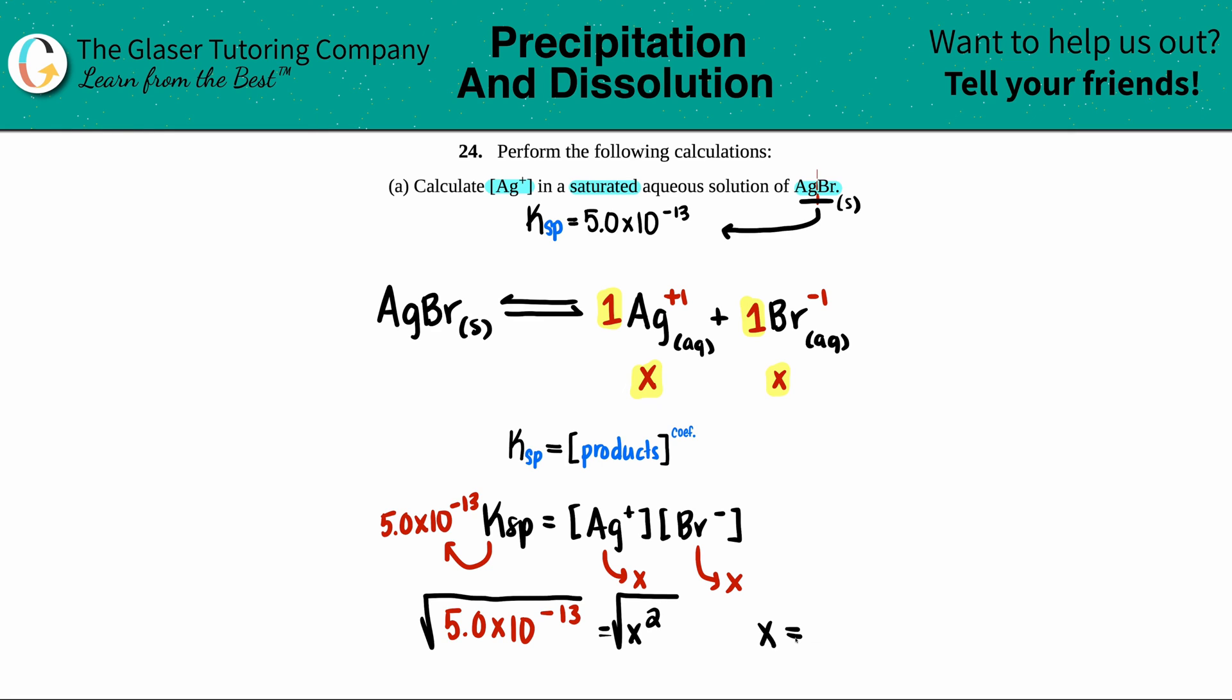So square root of 5 × 10^-13 is, I guess, 2 sig figs, 7.1 × 10^-7. And that's molarity because we're dealing with concentration values.